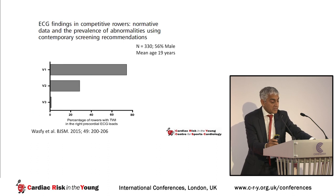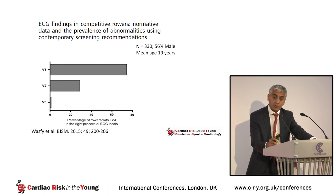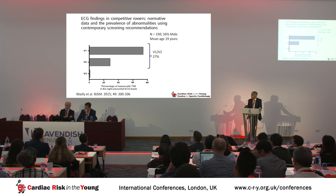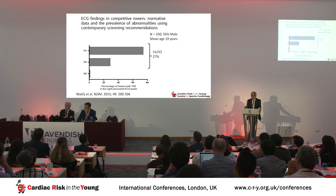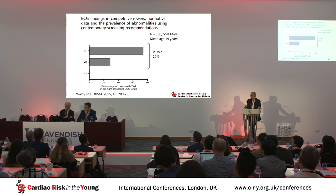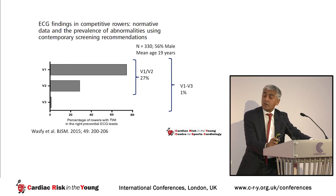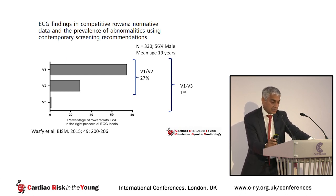A separate dataset of 500 younger rowers — half male, half female — found that one in five athletes had T wave inversion in V1 and V2, suggesting that T wave inversion up to V2 is relatively non-specific and should not be a concern unless other anomalies are present. Only 1% had T wave inversion extending beyond V2.